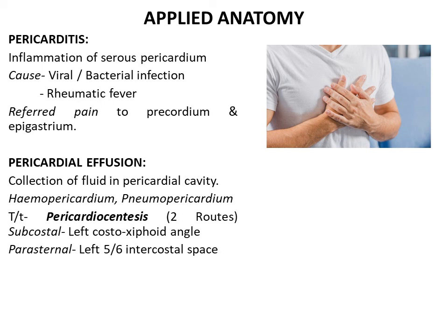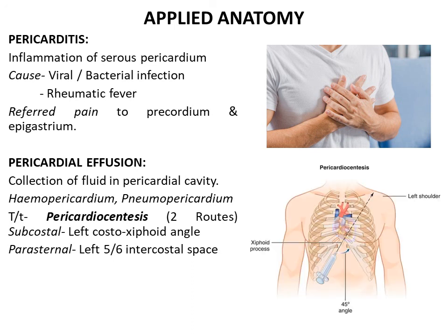Two routes commonly used for pericardiocentesis are: the subcostal route through the left costoxiphoid angle, and the parasternal route through the left fifth to sixth intercostal space. The common subcostal route involves inserting the needle at an angle of 45 degrees with the skin, directed backwards, upwards, and towards the left shoulder.